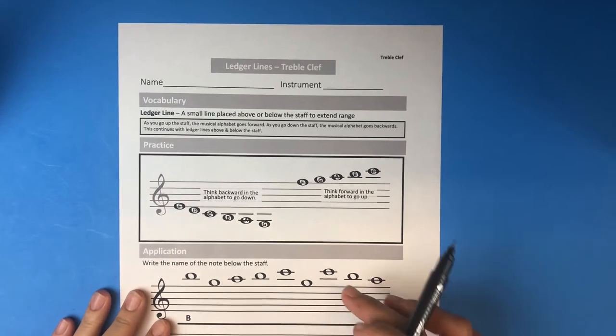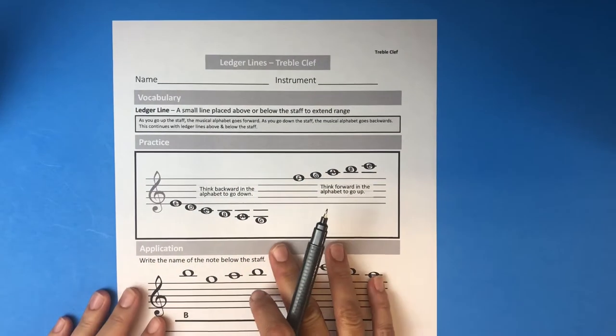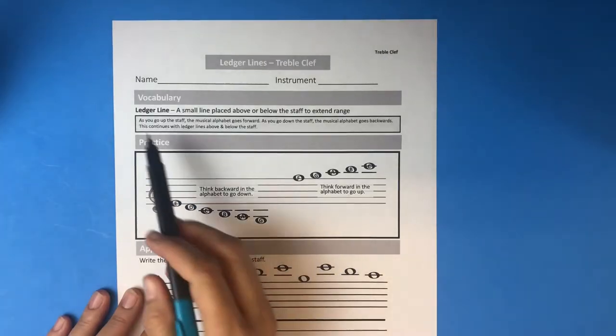Okay, today we're going to be talking about ledger lines. This is the treble clef version. If you're bass clef, you're going to want to watch the other video. Make sure you put your first and last name and your instrument.